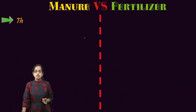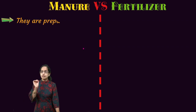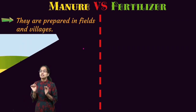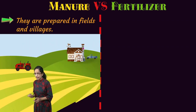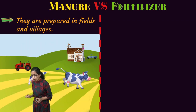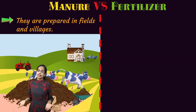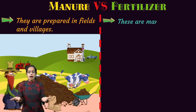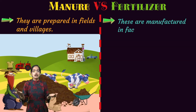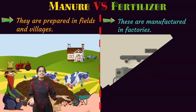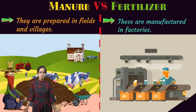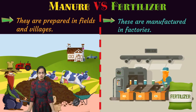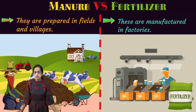Also, manure can be produced by the local people, by the farmers. However, fertilizers have to be produced in factories, and that is again one of the major differences.